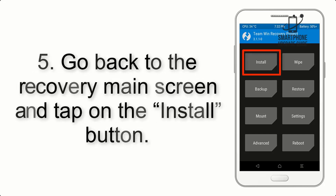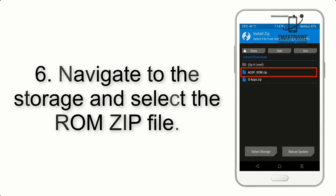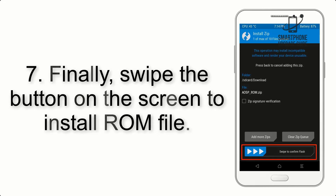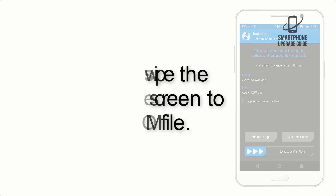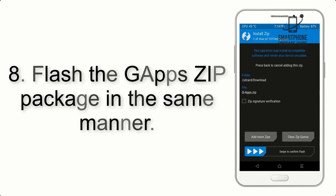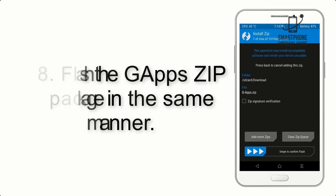Step 5: Go back to the recovery main screen and tap on the Install button. Step 6: Navigate to the storage and select the ROM zip file. Step 7: Finally, swipe the button on the screen to install the ROM file.